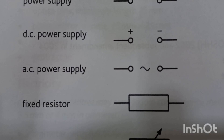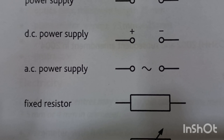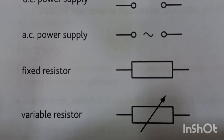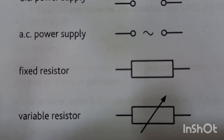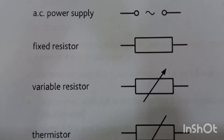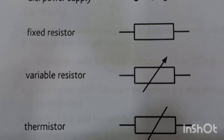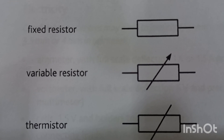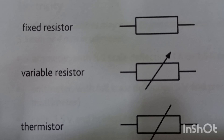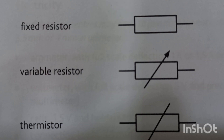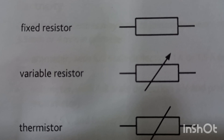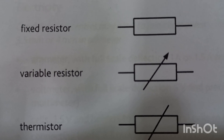This symbol is for the AC power supply and we put a sinusoidal wave symbol in the middle, representing the alternating power supply. This symbol is for the fixed resistor — the fixed resistor whose resistance will not change. Then we have this symbol for the variable resistor, also called a rheostat.